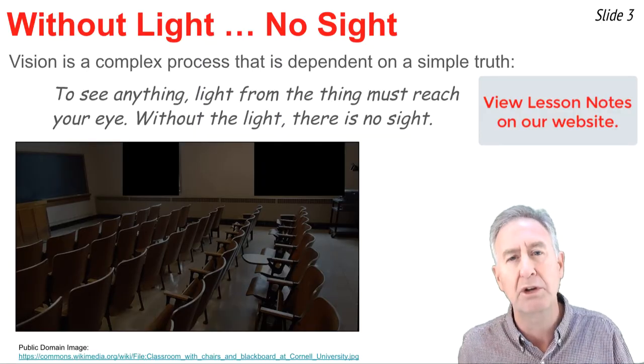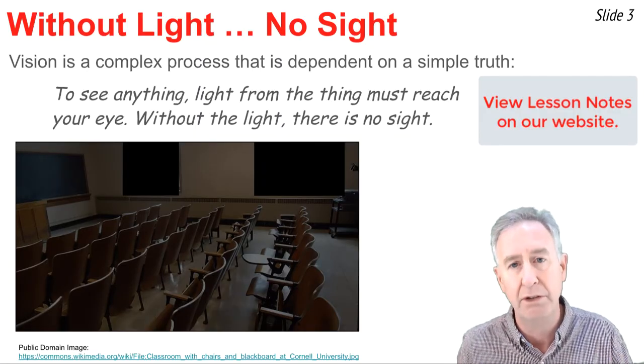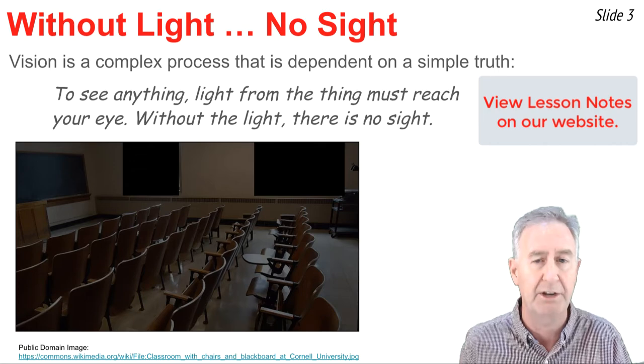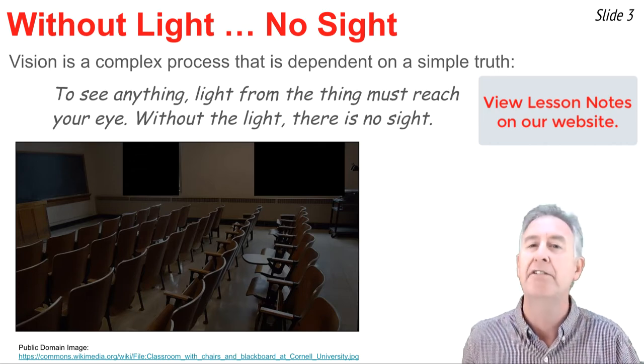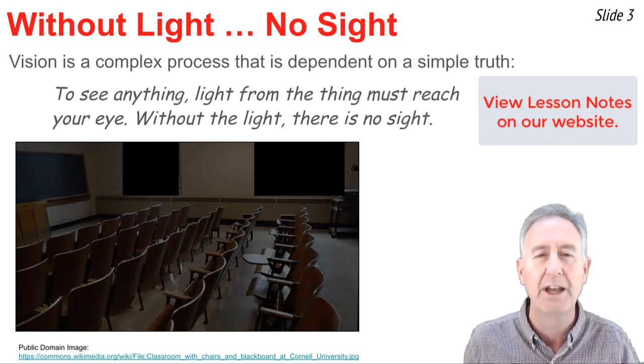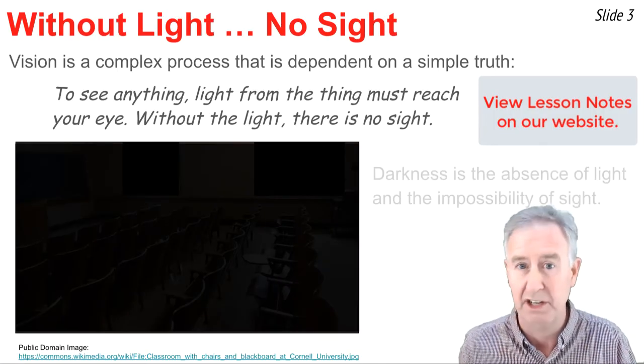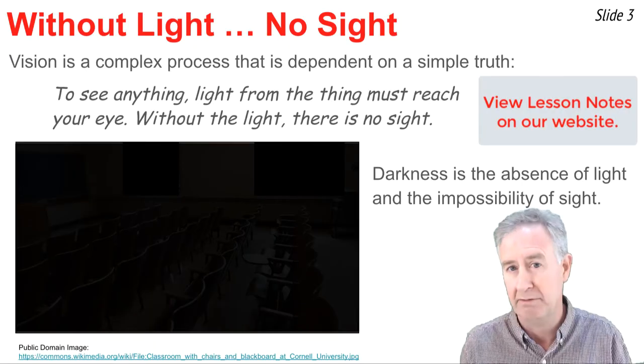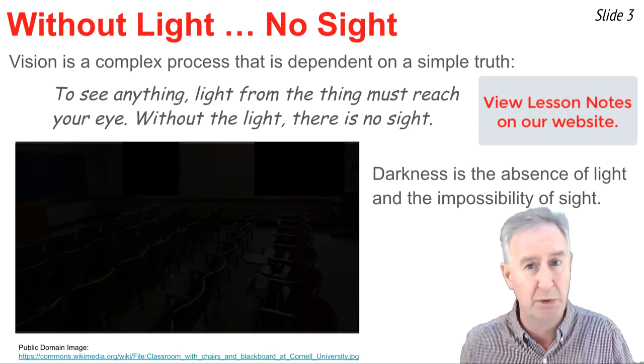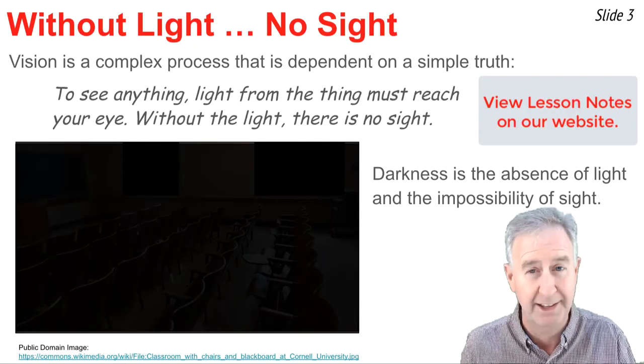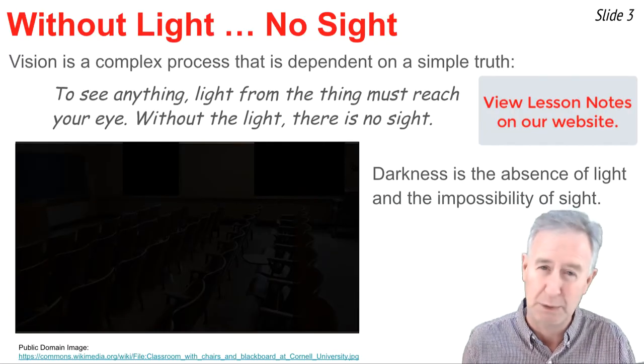And then let's suppose that we could go to the doorway of the classroom and cover the doorway so that no light gets in there and do a better job of sealing light from getting through those windows. Now what would the classroom look like? Well, it would look like this. It would look like darkness. Darkness is the absence of light, and without light, there would be no sight. And without sight, you wouldn't see any of the objects in the room.